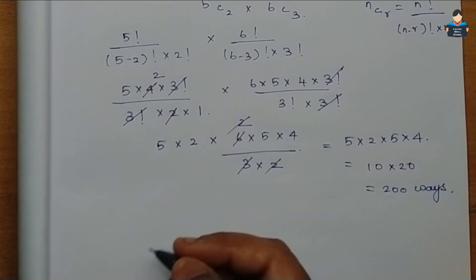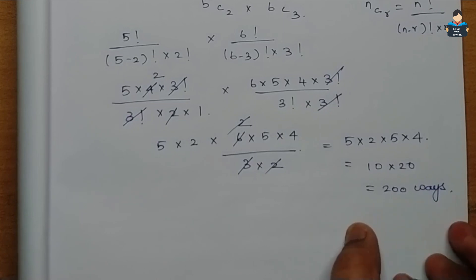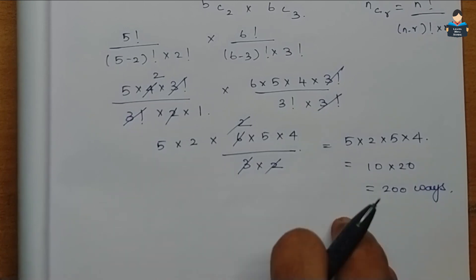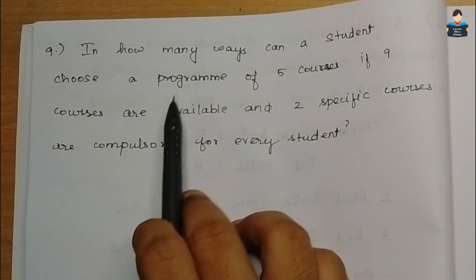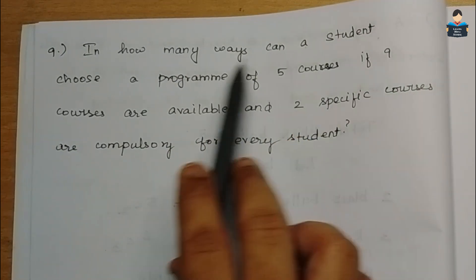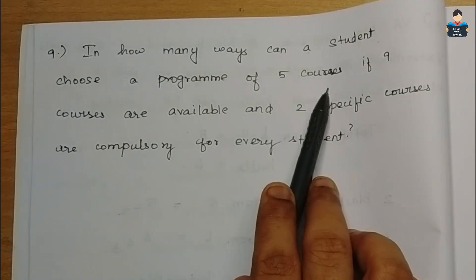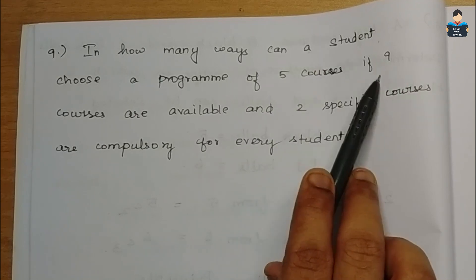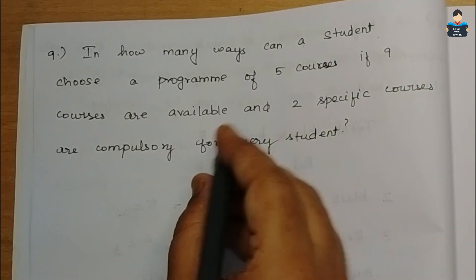So the required number of selections is 200 ways. That is the answer to Question 8. Now Question 9: In how many ways can a student choose a program of 5 courses if 9 courses are available?